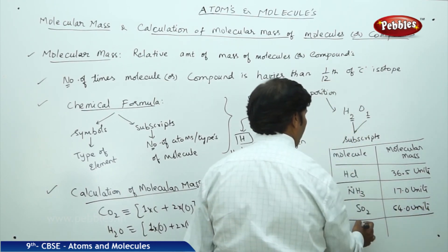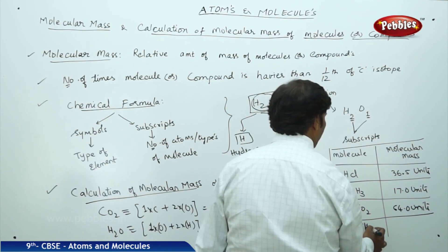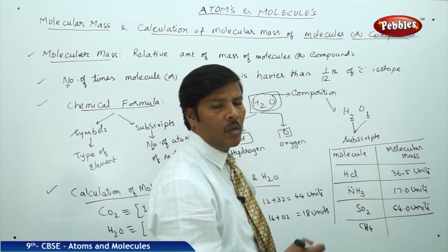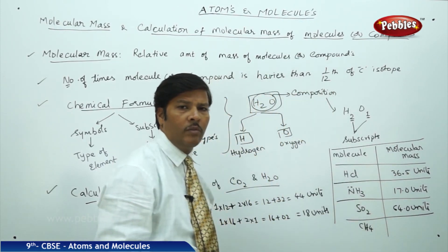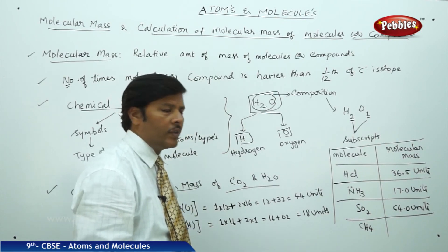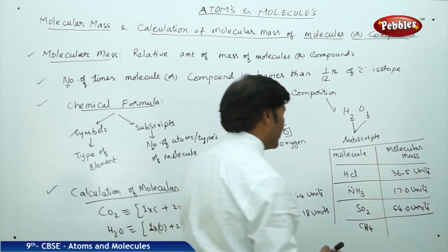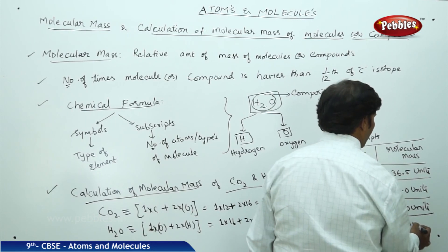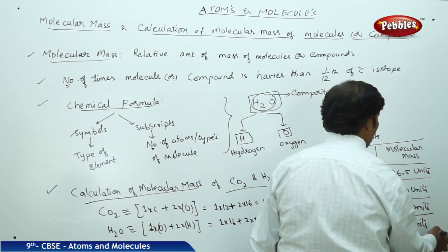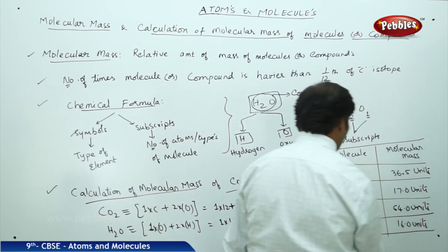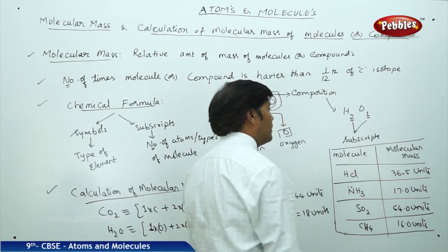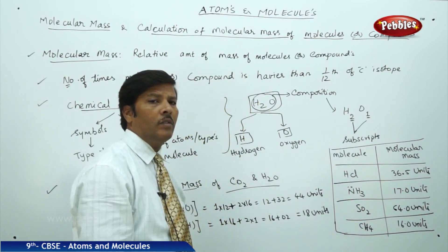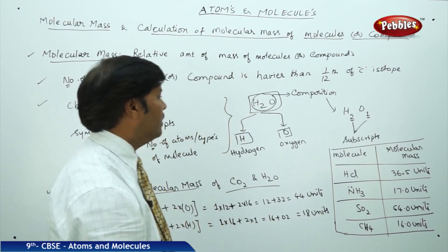Likewise, for methane CH4, one carbon atomic mass is 12 units and there are 4 hydrogens giving 4 units, so the molecular mass is 16.0 units. You can calculate the molecular mass of as many molecules as possible in this way.